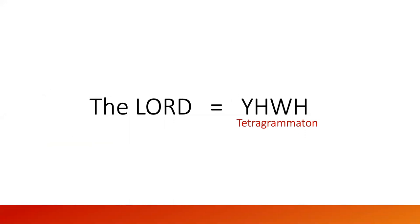Translation tells you about the definition of a word. So if you translate a French word to English, you know what the word means. 'Un chien' means a dog, 'un chat' means a cat. You understand what is being said. So translation tells you what it means.